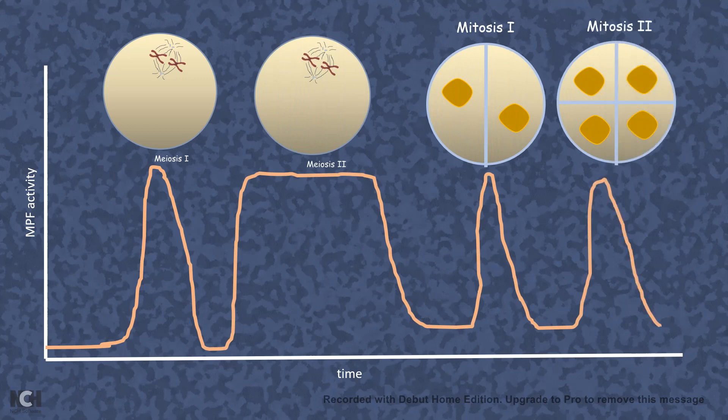meiosis 2, the first mitotic division and the second mitotic division. So, while the cell is dividing, just before that, the activity of the MPF is really increasing.